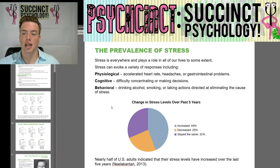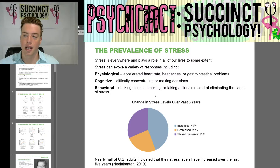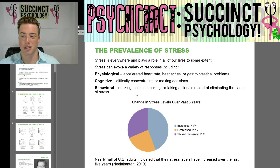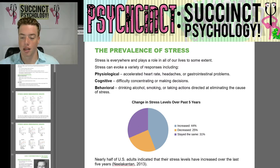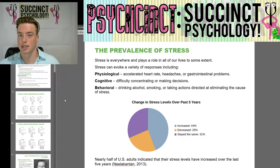The prevalence of stress: stress is everywhere and plays a role in all of our lives to some extent. Stress can evoke a variety of responses, including physiological — such as accelerated heart rate, headaches, or gastrointestinal problems — cognitive responses like difficulty concentrating or making decisions, and behavioral responses such as drinking alcohol, smoking, or taking actions directed at eliminating the cause of stress. Nearly half of U.S. adults indicated that their stress levels have increased over the last five years.